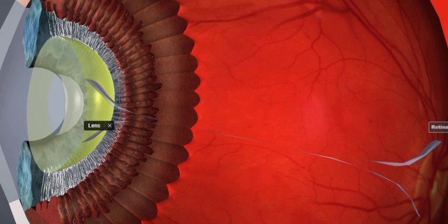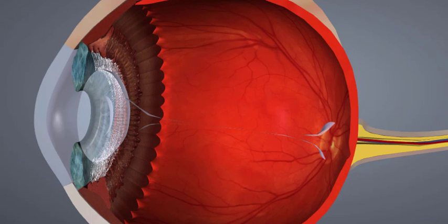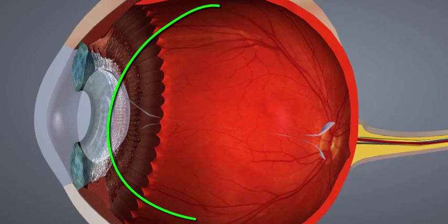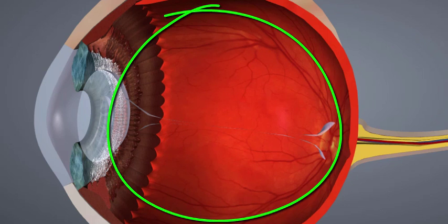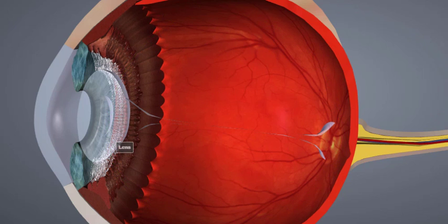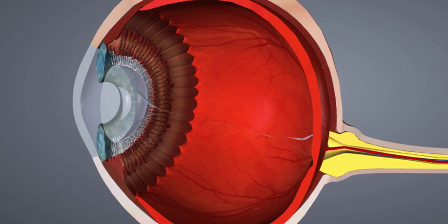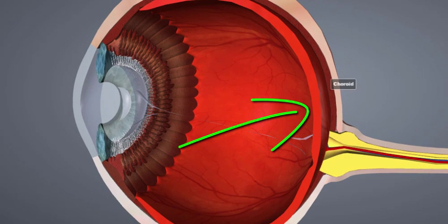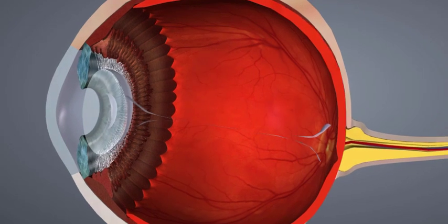Let's finish up by taking a look at the vitreous humor. The vitreous humor is found in the vitreous chamber, which is the large posterior cavity behind the lens. It constitutes most of the volume of the eye and is a jelly-like substance that contributes to intraocular pressure. It holds the retina against the choroid so that the retina provides an even surface for the reception of clear images.